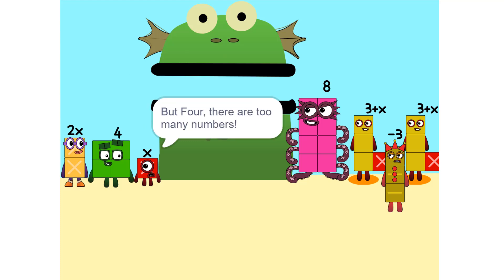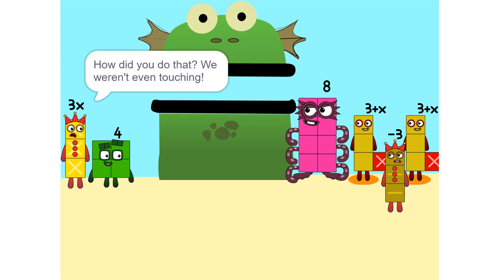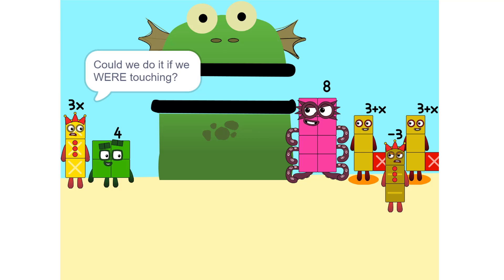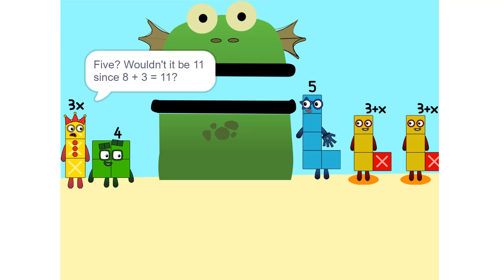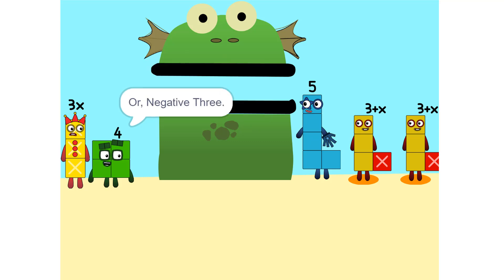It's equal. Now we can figure out your value. But there are too many numbers. We'll never figure it out. Yeah, we can. If we do it step by step and use our arm skills. So let's get started. One thing we can do is add these two together. How did you do that? We weren't even touching. They don't have to be. Could we do it if we were touching? Yeah. We can also add these together. 5. Wouldn't it be 11 since 8 plus 3 is 11? No. Because we're adding together 8 and minus 3, or negative 3. So, it's 5.